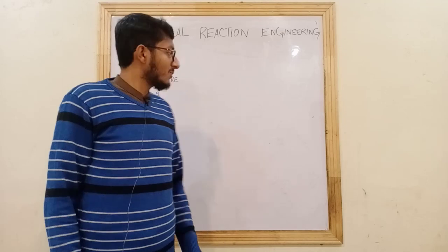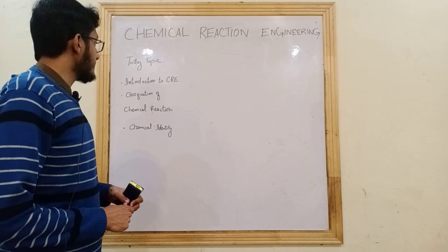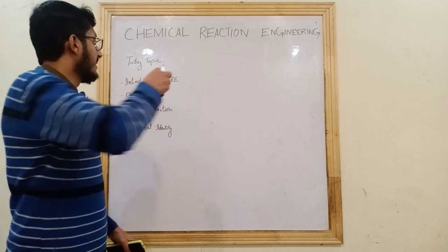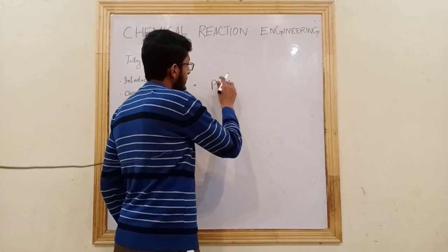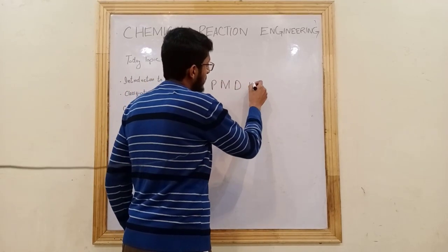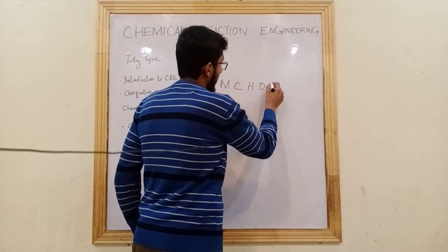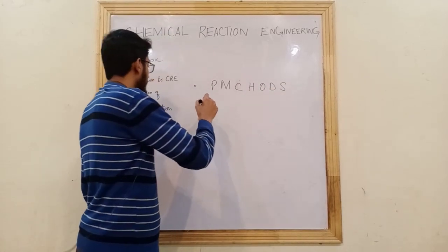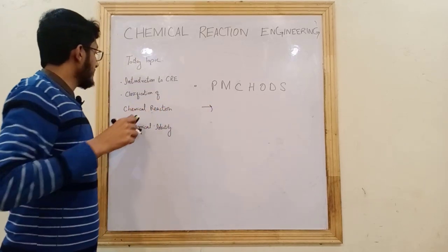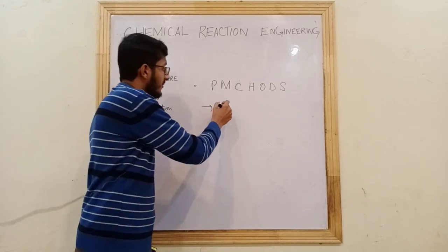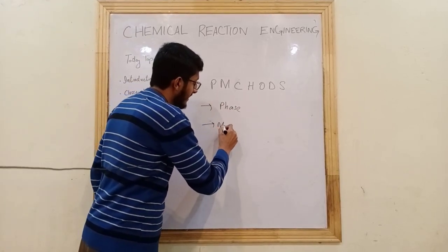For the classification of chemical reactions: P stands for Phase, M stands for Molecularity, C stands for Catalyst, H stands for Heat effect, O stands for Order, D stands for Direction, and S stands for Steps. We will describe each of these one by one in detail.